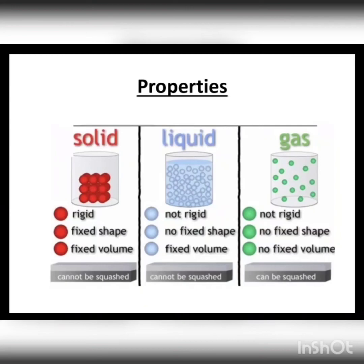In the case of solid, it has a fixed volume. Similarly, in the case of liquid, it also has a fixed volume — whether it is in the shape of a jar, it still has a definite volume. But in the case of gas, it has no fixed volume.